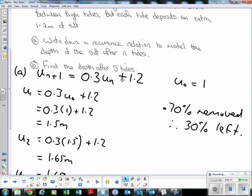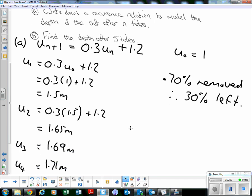That'll be 0.3 times 1 plus 1.2, which is 0.3 plus 1.2, which equals 1.5. So after that first tide there's one and a half meters of silt. Again, 30% of it remains when 70% is removed, then the tide comes in again and deposits another 1.2 meters.